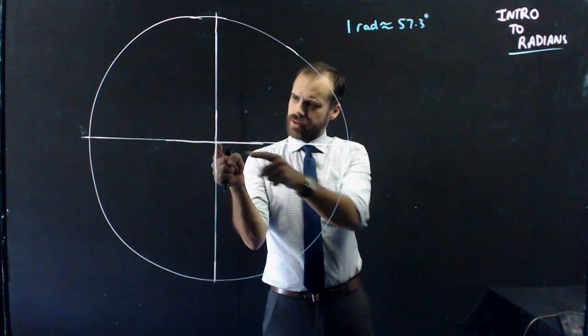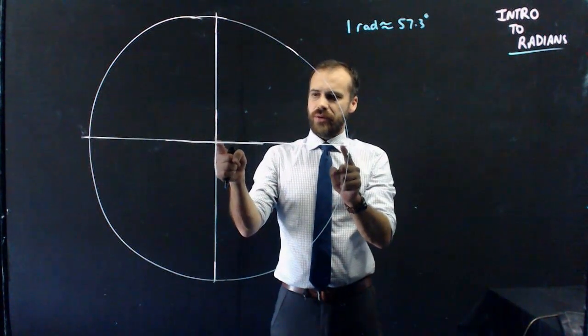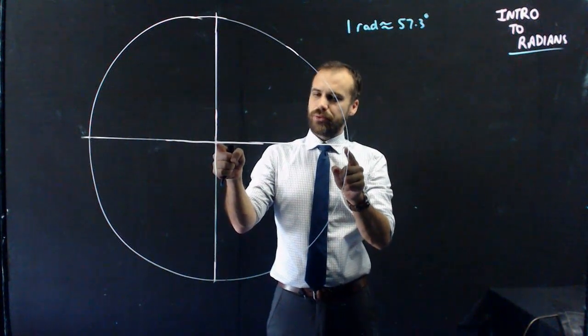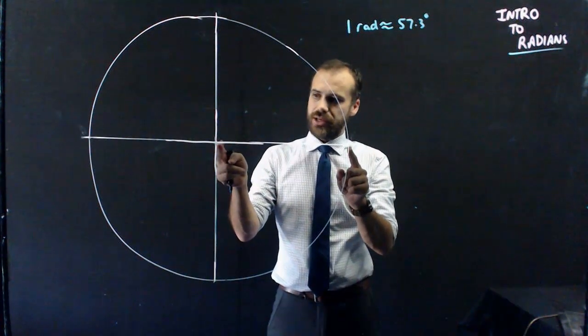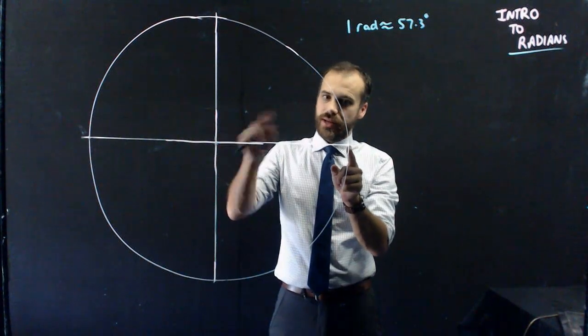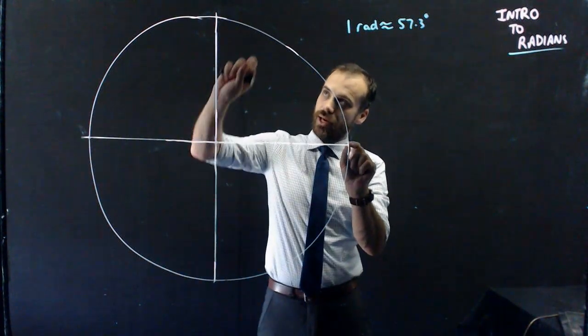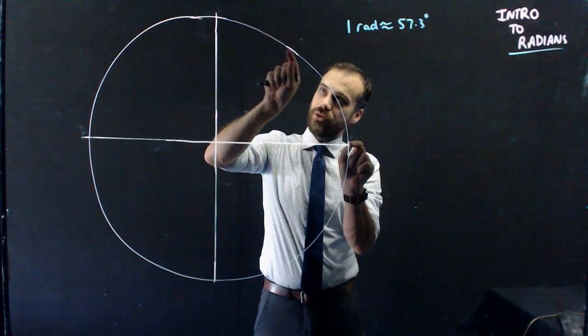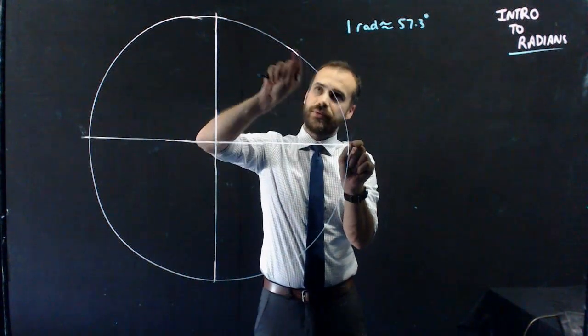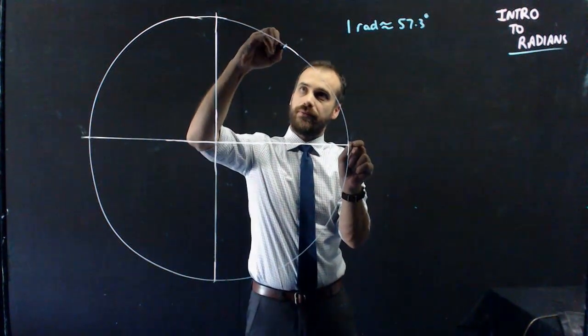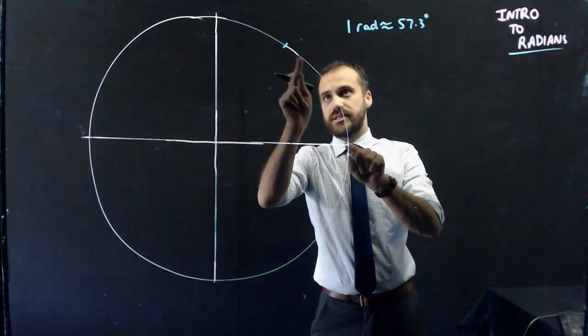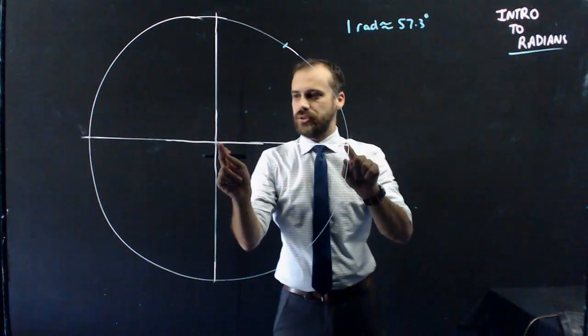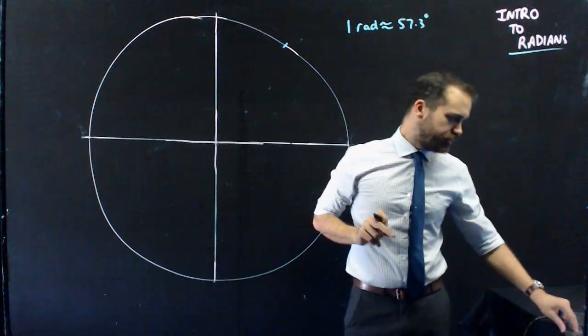All right, here we go. This is our radius. Now, I'm going to take a length exactly equal to that radius. And then I'm going to take it and lay it on this arc. Okay. Now, trust me on this. This length is equal to that length.